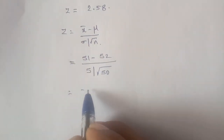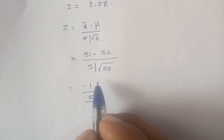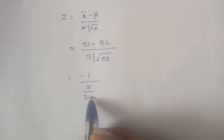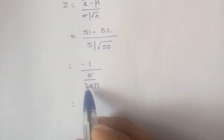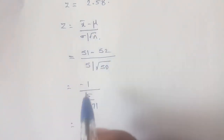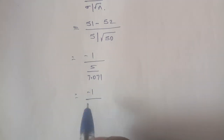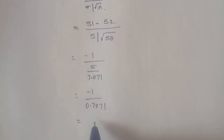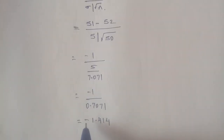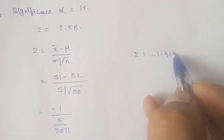Z = (51 - 52) / (5 / √50) = -1 / (5 / 7.071) = -1 / 0.7071 = -1.414. Taking the absolute value by applying the modulus, |Z| = 1.414.